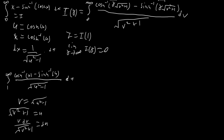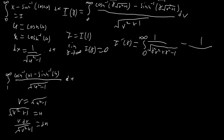Now all we have to do is differentiate. When we differentiate, because of the chain rule, the √(v²+1) in the denominator disappears. Using the derivatives for cosh⁻¹ and sinh⁻¹, we end up with 1/√(γ²v²+γ²−1) minus 1/√(γ²v²+γ²+1), all integrated dv.